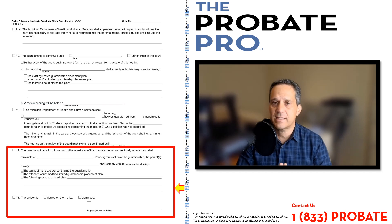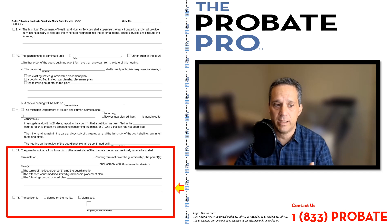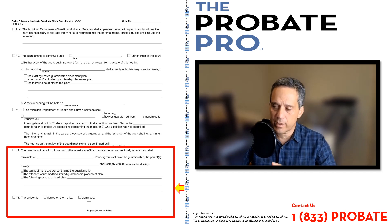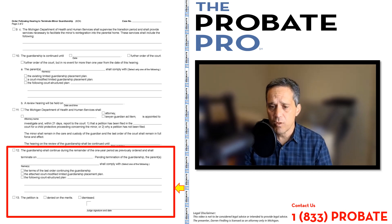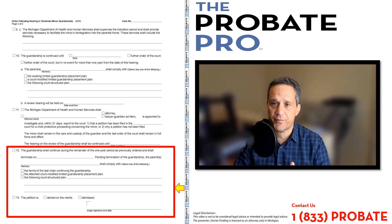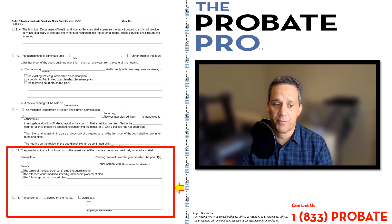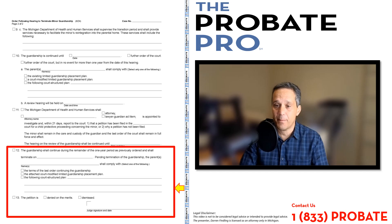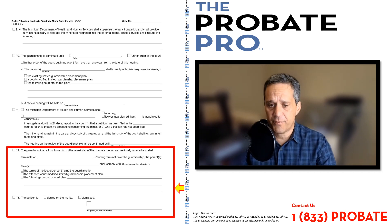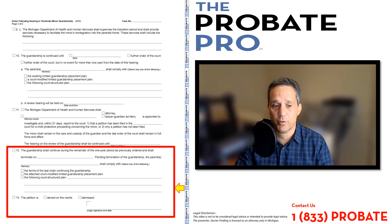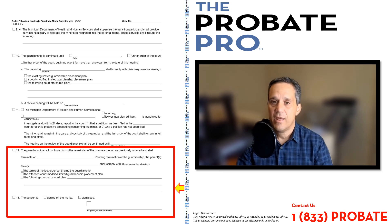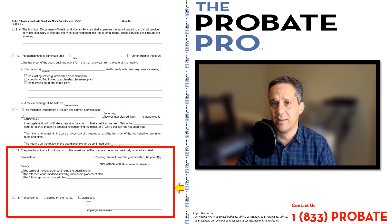Paragraph twelve provides that the guardianship shall continue for a period of one year, giving the court flexibility for typical outcomes following a petition to terminate a minor guardianship. Paragraph thirteen is for when the petition is either denied on the merits or dismissed — the court can use paragraph thirteen in those situations. And of course, with all court orders, there is a judge's signature and date indicating that the court has entered or signed this particular court order.